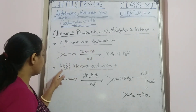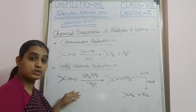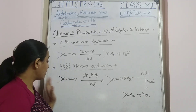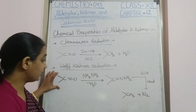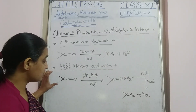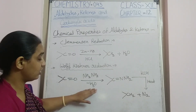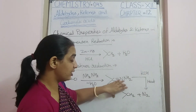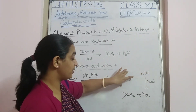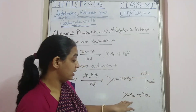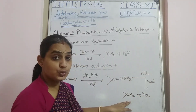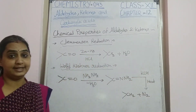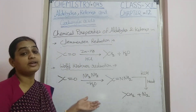In Wolf-Kishner reduction, aldehydes and ketones react with hydrazine (NH₂NH₂) and water to form an intermediate, which upon heating with KOH is converted to the CH₂ group, yielding the hydrocarbon. Thank you very much.